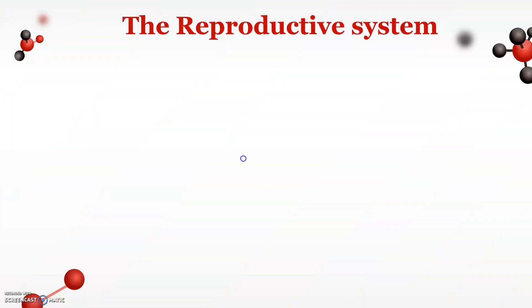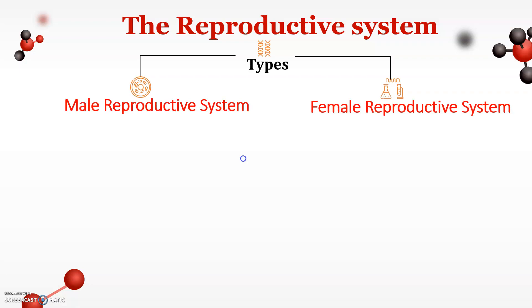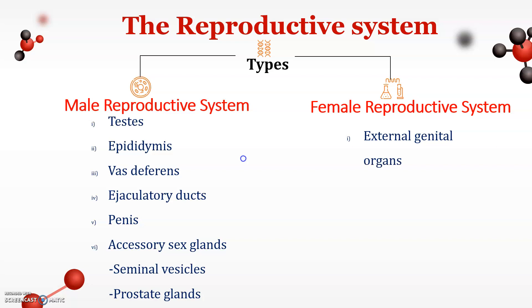There are two different systems of the human body: number one is the male reproductive system and number two is the female reproductive system. The female reproductive system contains external genital organs and internal genital organs.